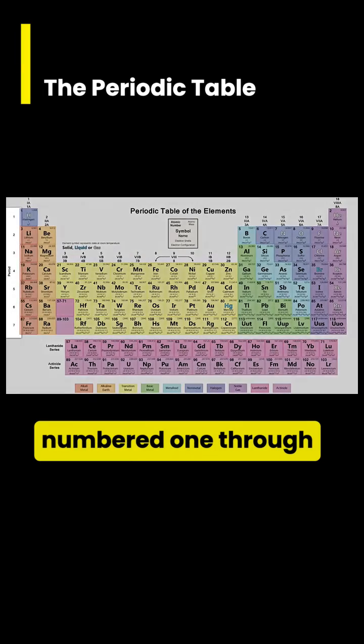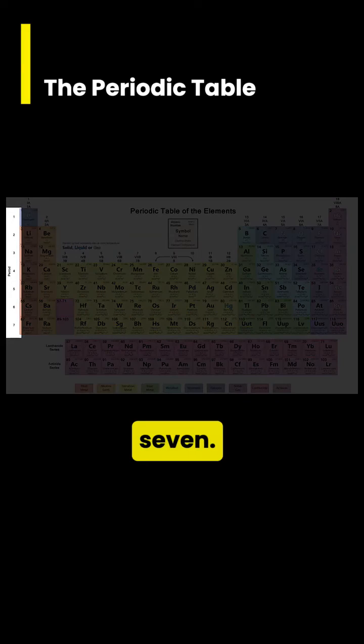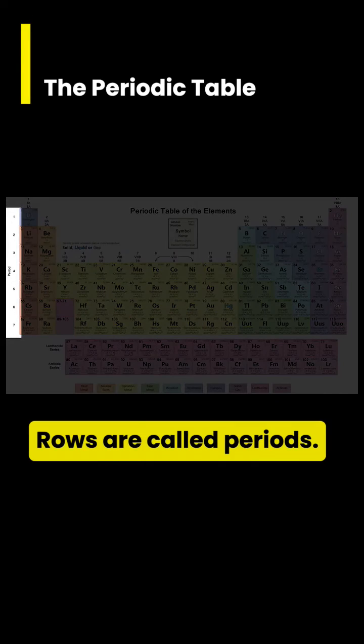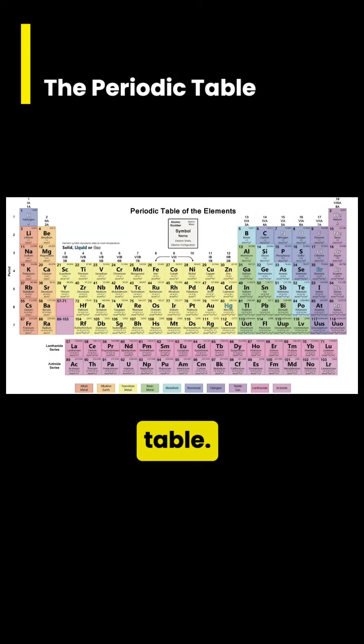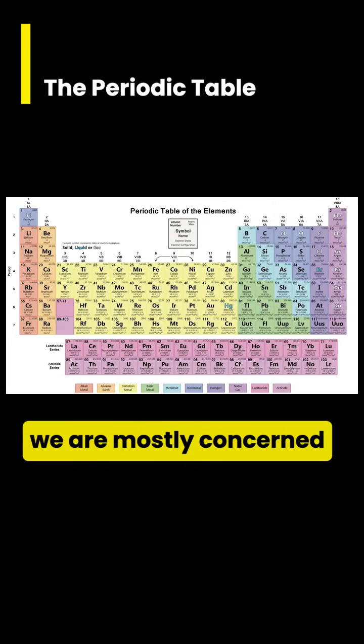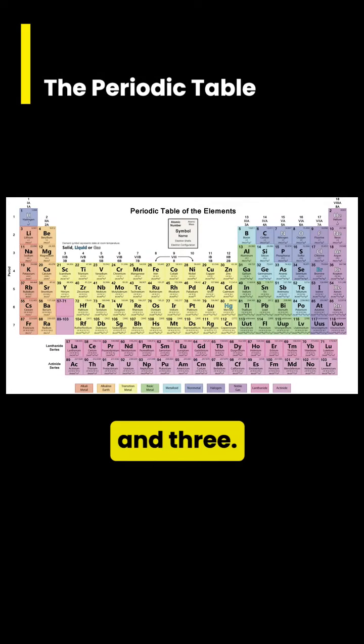Next, notice that each row is numbered 1 through 7. Rows are called periods, hence the term periodic table. In this class, we are mostly concerned with elements in periods 1, 2, and 3.